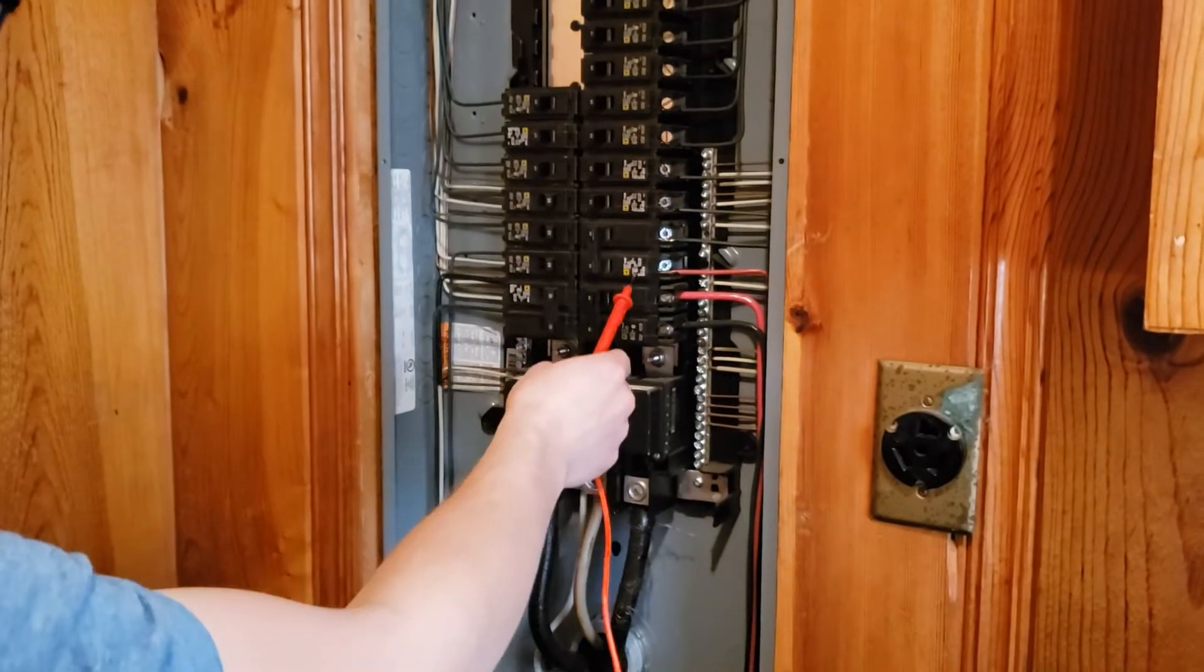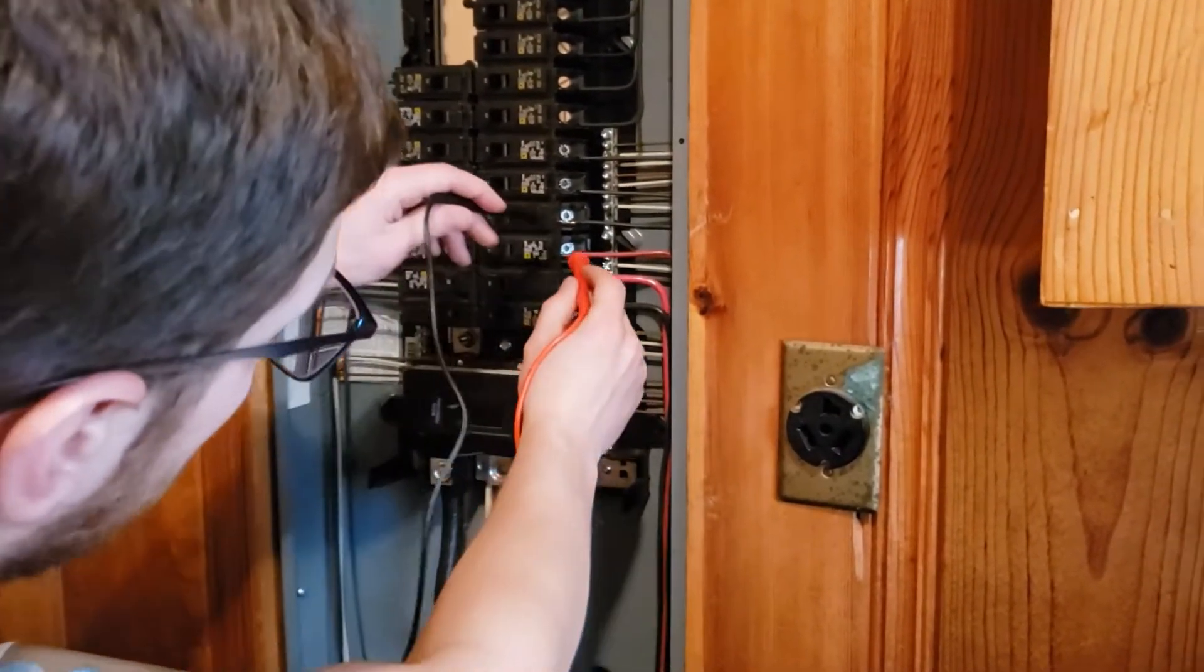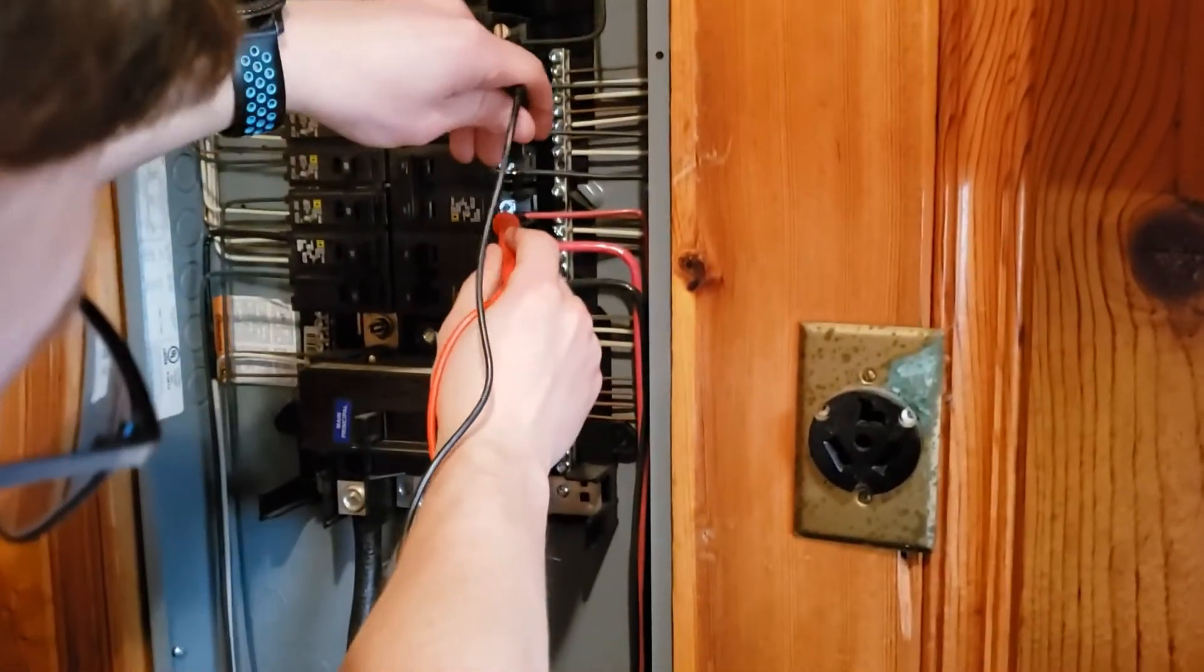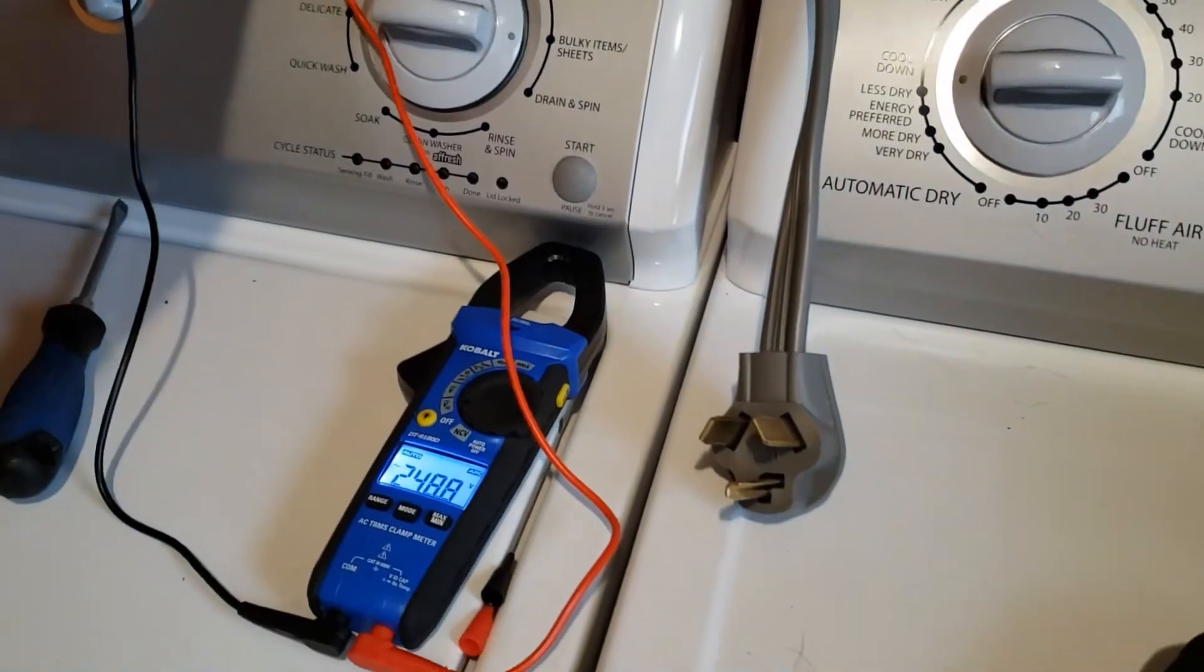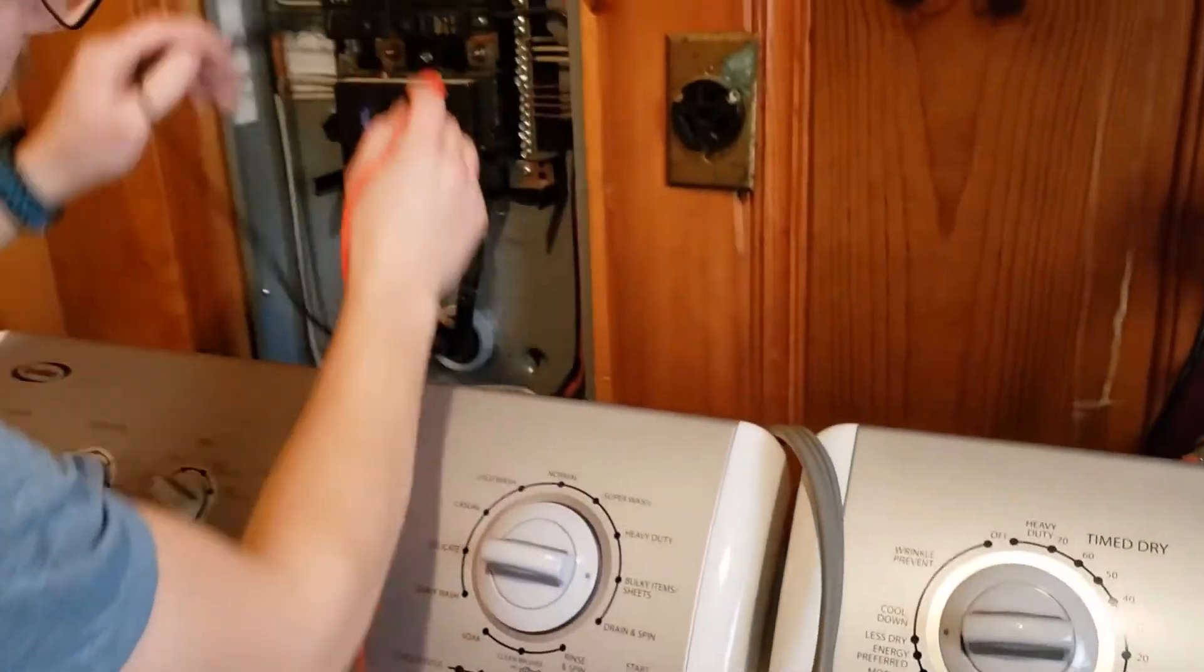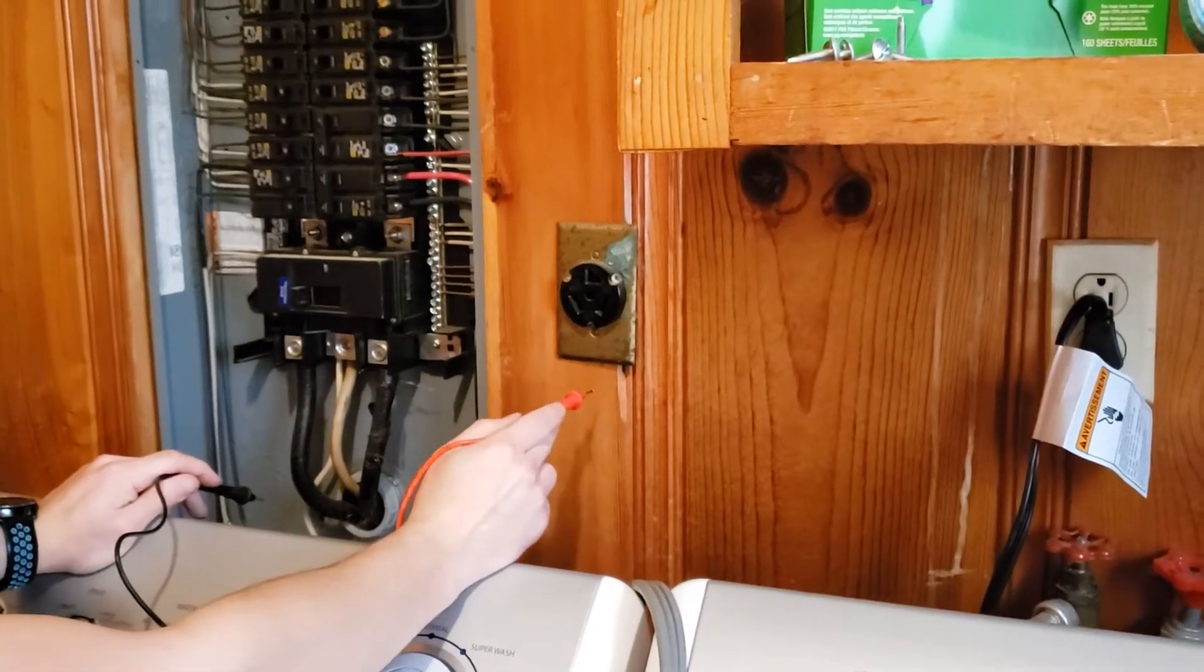Now, this is a double pole 30 amp breaker right here that's powering my dryer. So if I go to that, I go to both legs. These are both hot legs. And I've got 248 volts. So I know that there's nothing wrong with these breakers. I also know there's nothing wrong with this receptacle because I just got 240 again.